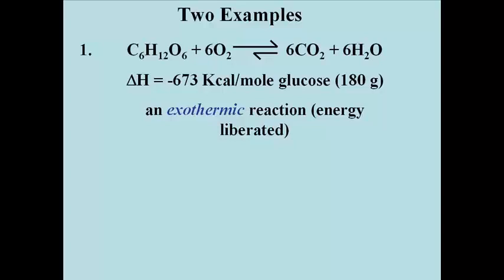That means the enthalpy change, or delta H, is equal to minus 673 kilocalories per mole of combusted glucose. A reaction that liberates heat is defined as exothermic, and the delta H of an exothermic reaction is going to be negative. Now you should recognize this chemical equation as the one for respiration.